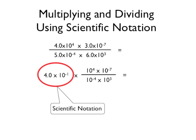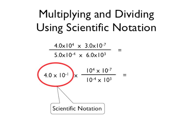Or, in scientific notation, 4 times 10 to the minus 1. The 10 to the minus 1 is another power of 10, so you can group it with the others. Combining all the exponents in these powers of 10 gives you negative 1 plus 4 minus 7 minus a negative 4 minus 3.